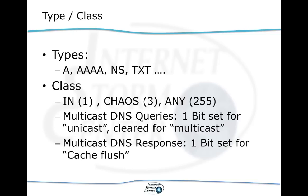Multicast DNS reinterprets the class field slightly. The first bit indicates whether we are expecting a unicast or multicast response to a query. In a response, bit one is set if we want the recipient to flush its cache. Typically TTL defines how long a record is stored, but in multicast DNS — which assumes a dynamic self-organizing network — we may want to indicate a record needs to be replaced before its TTL expires, and that's where the cache flush bit comes in.